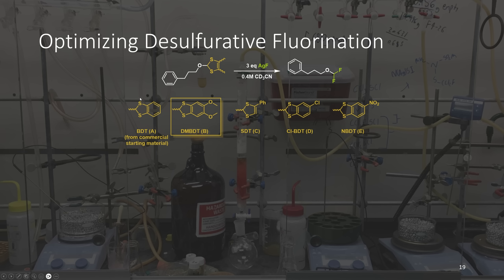We had the idea: could we replace a thiocarbonyl with a dithiol? This would still be able to conduct the electrons between the two sulfurs, and perhaps by playing with the electronics of this double bond, we could make it reactive enough to react with silver fluoride. We took the commercially available 1,3-benzenedithiolium tetrafluoroborate and treated it with 3-phenyl-1-propanol. Upon treatment with silver(I) fluoride, we were happy to see that the difluoromethyl ether was able to be prepared.